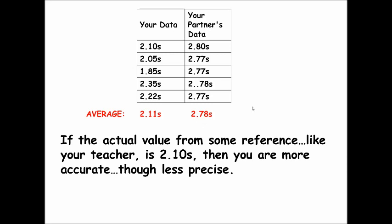However, your partner's measurements are more precise because they're closer together. Even though your accuracy is better, you're not as precise.